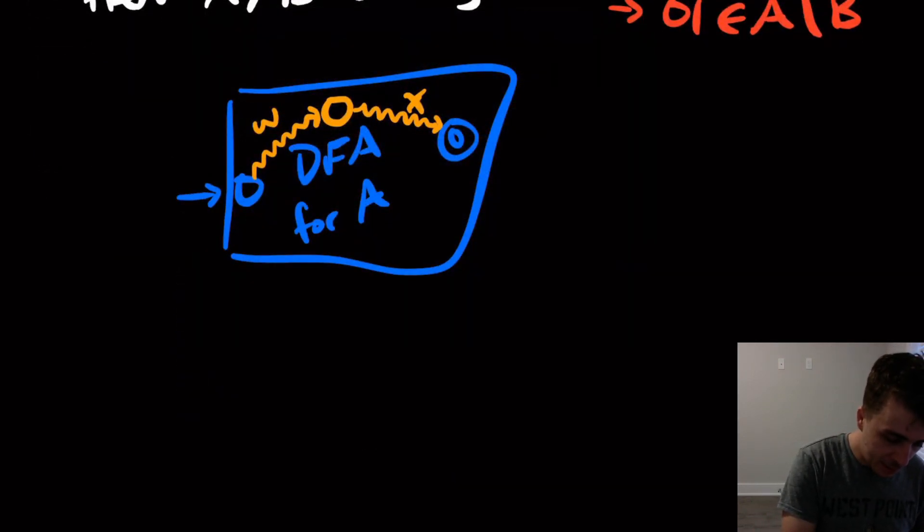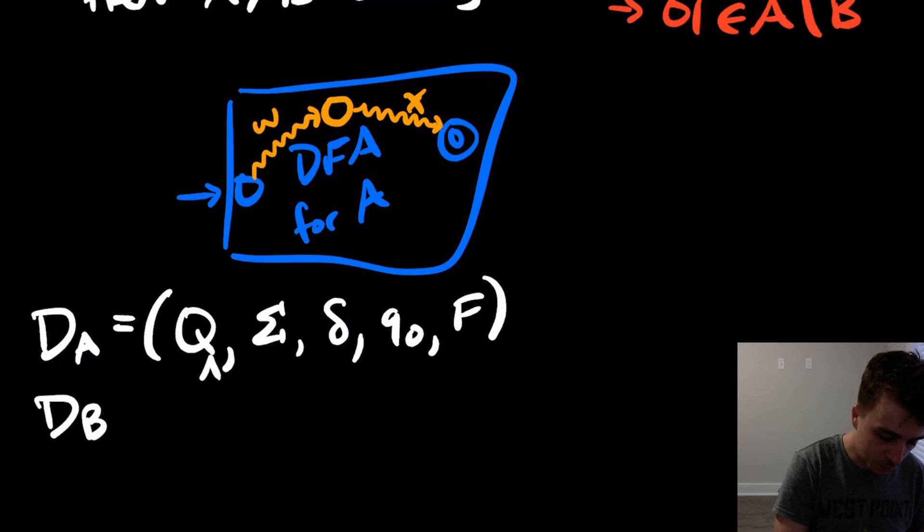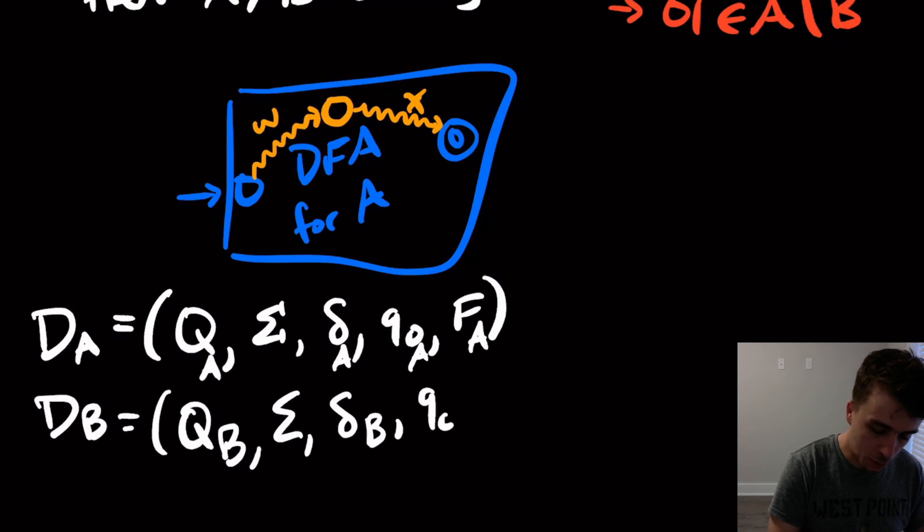So let's let D sub A be a DFA for A. So here I'm going to give the states Q, alphabet sigma, delta, q_0, F is a DFA for A. And then let's do one, maybe I should put subscripts on these. So I'll put A's on the subscripts for everything. And then D sub B is going to be a DFA for the language B. So it may have a completely different transition function, although we're not going to actually use it here.